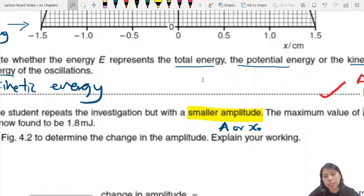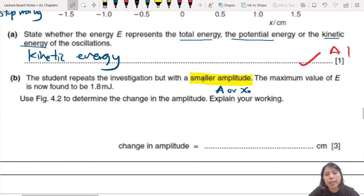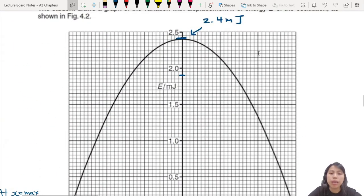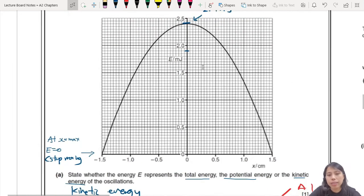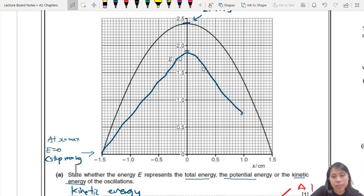But then they ask you this question. What is the change in amplitude? Use the figure to determine the change in amplitude. And it must explain your working. How do you determine the change in amplitude? Well, you know this thing will be lower. The curve will somehow be lower. But how will the amplitude change? Will it be at the same amplitude? Or will the amplitude be smaller? You think about it.